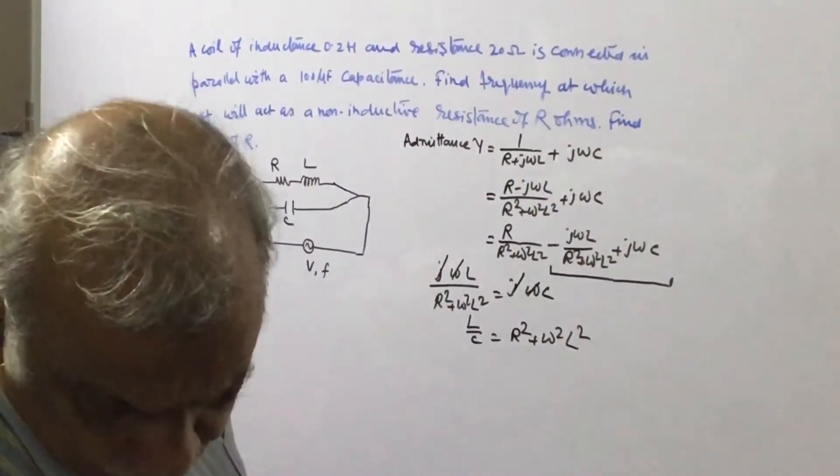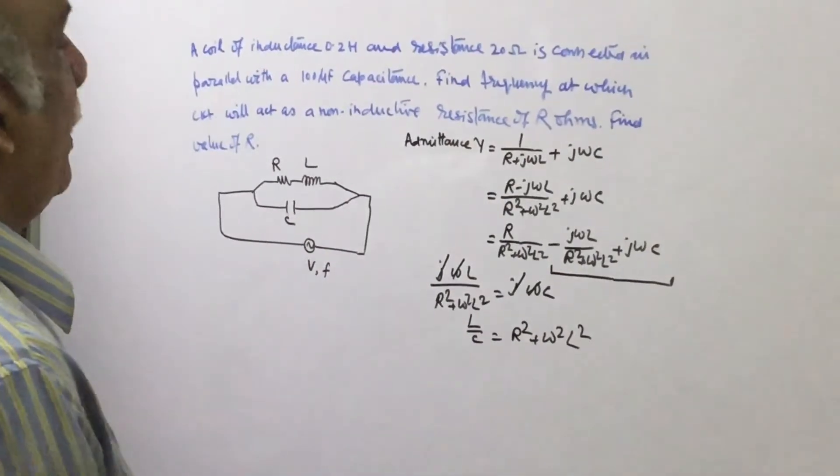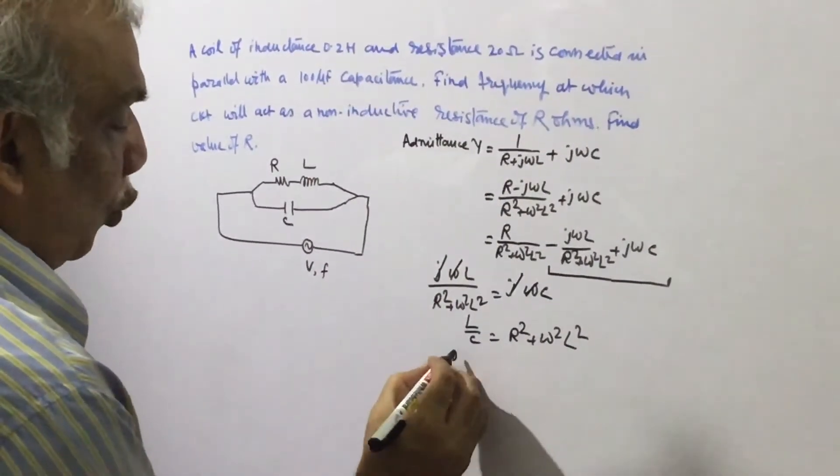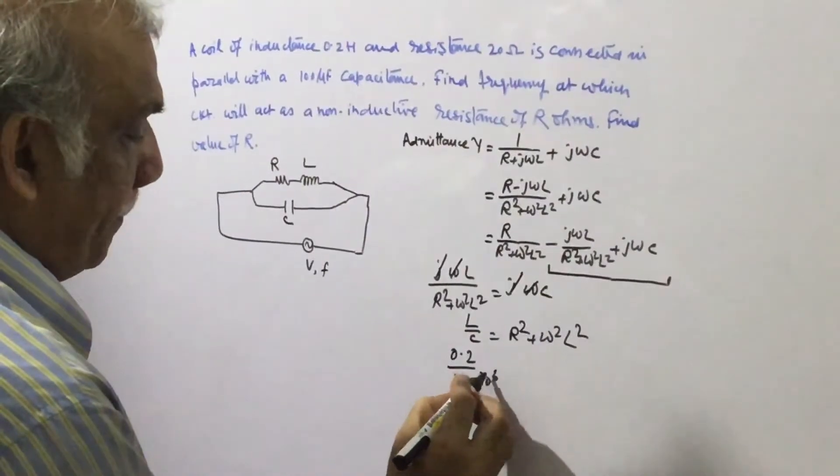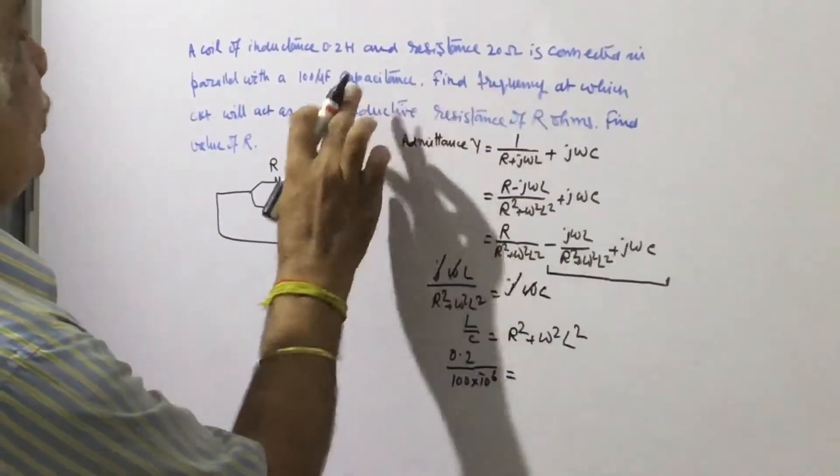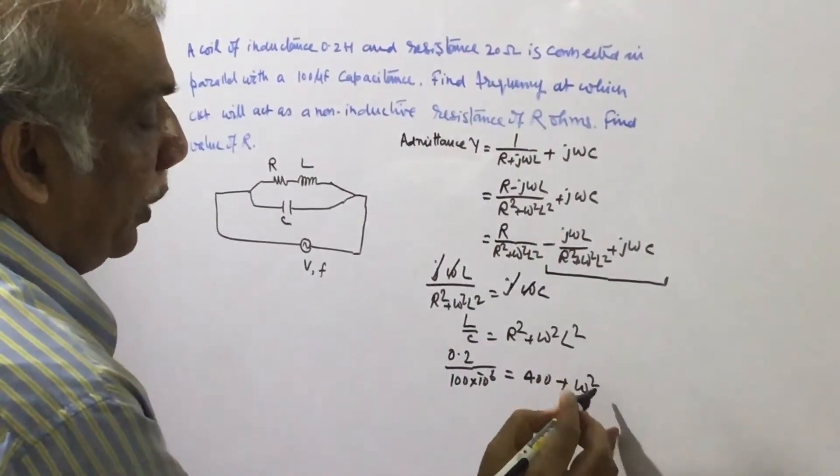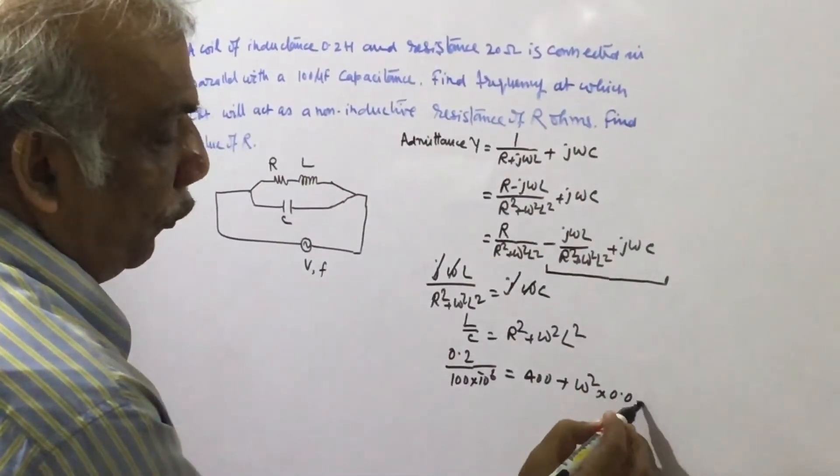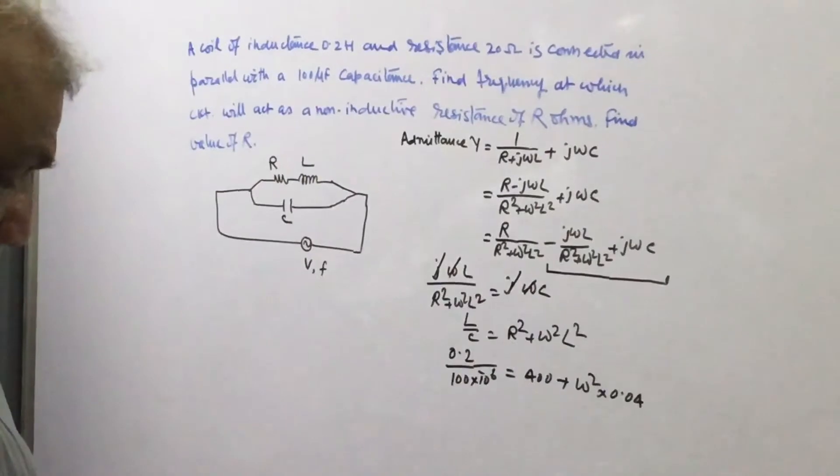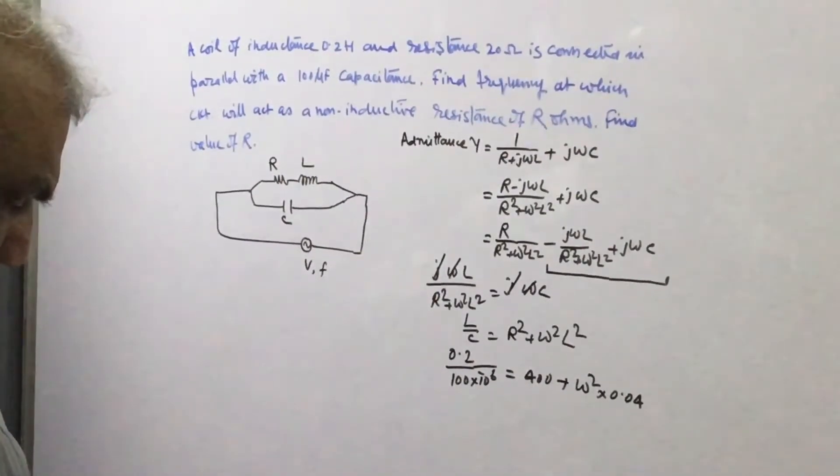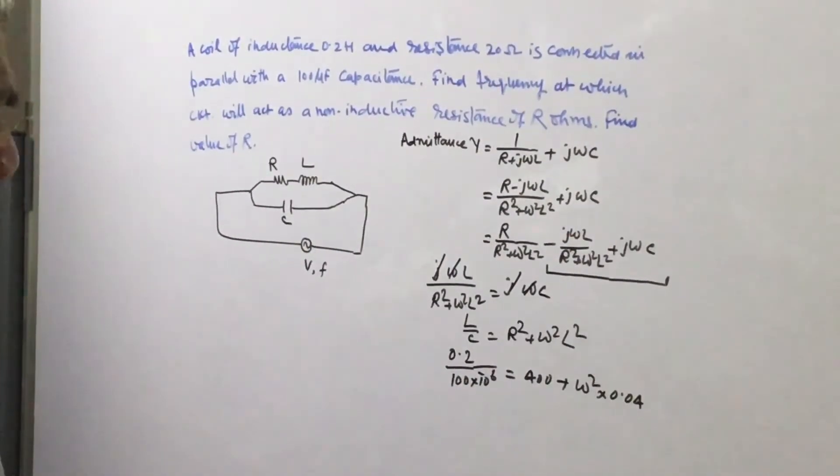So, from here, we can determine this omega. So, L is 0.2 and C is 100 microfarad, R is 20 ohm, which becomes 400, plus omega square L square. L square is 0.2 and it becomes 0.04. So, 0.2 divided by 100 microfarad, from there, this becomes 2000.